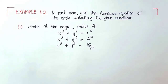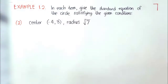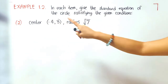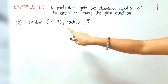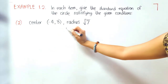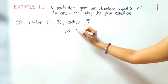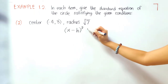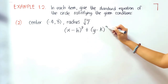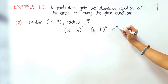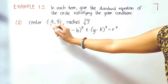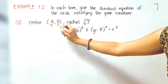Let us now proceed to problem 2. The center here is negative 4, 3, and the radius is 7. Since the center is not at the origin, we'll be using x minus h quantity squared plus y minus k quantity squared is equal to r squared. This is our h, and this is our k.